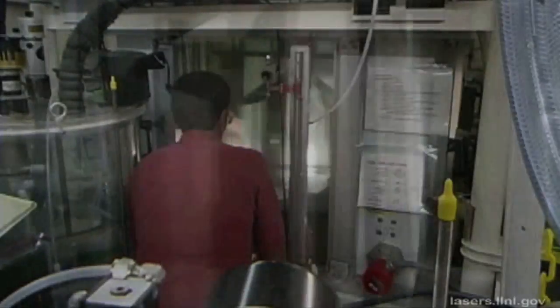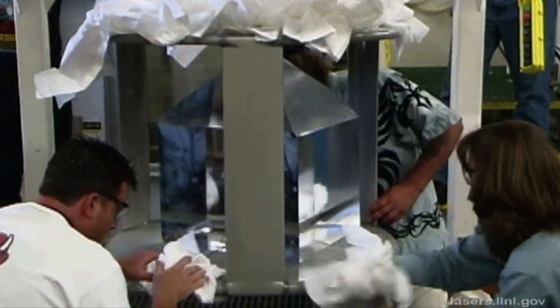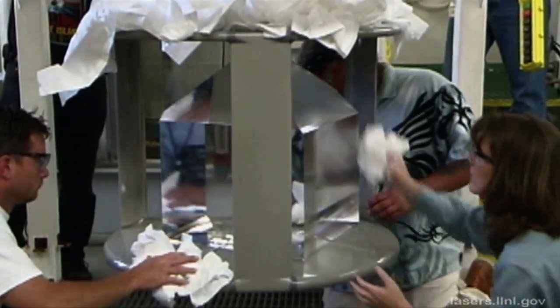We also had to learn how to build very large KDP and deuterated KDP crystals to double and then triple the light. So we went from rapid growth crystals that were about this big to crystals that were over 700 kilograms, transferred that to industry Cleveland crystals. That worked very well. And it goes on and on like this, it's just a great story.